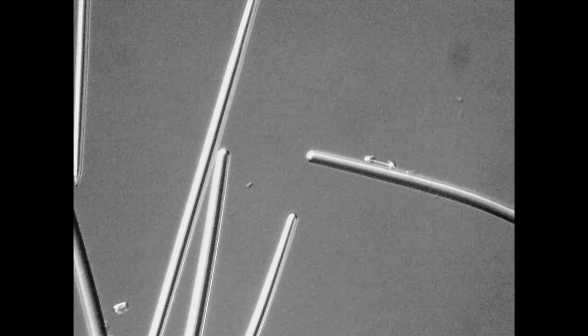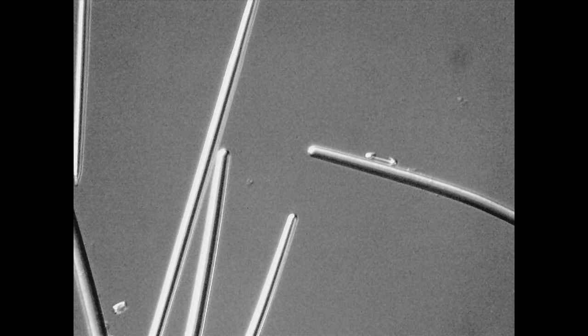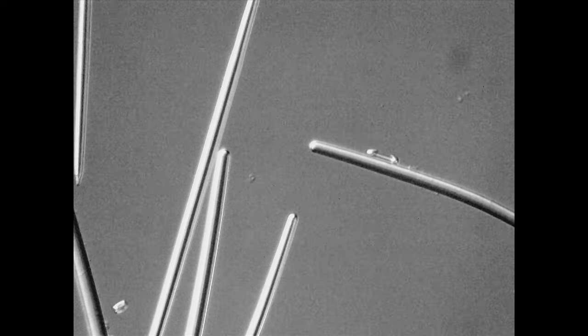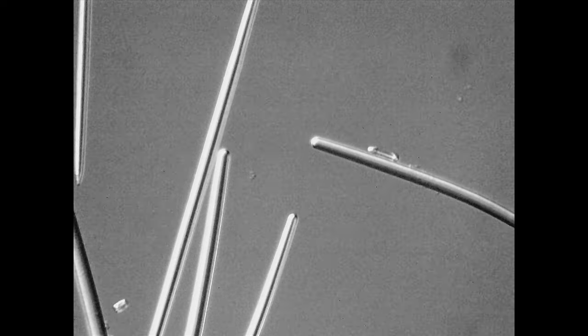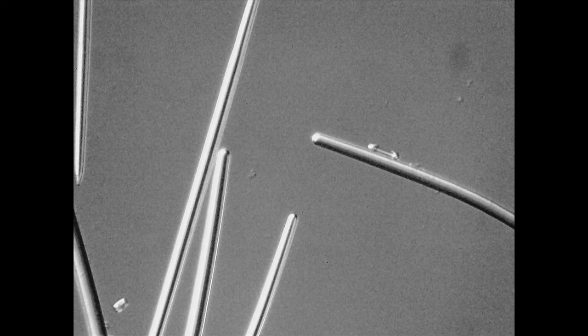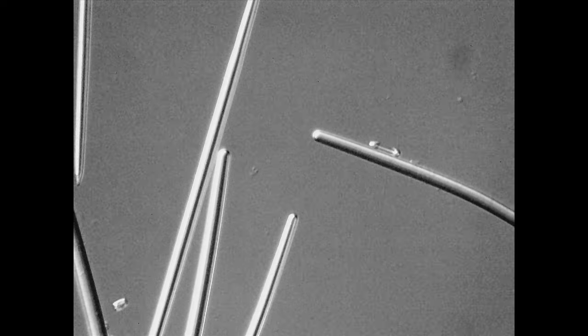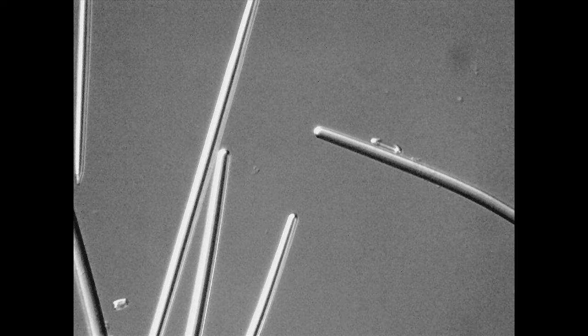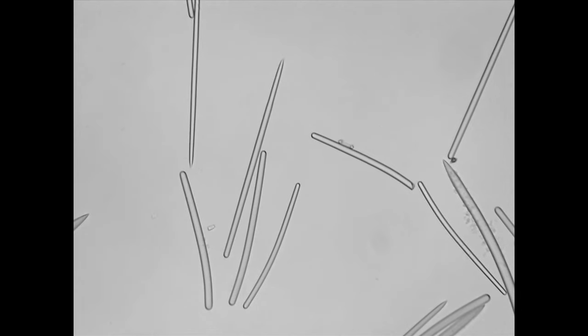Our second slide is Ea trachota birutulata and we can see the very small birotules here. This is at a higher power, this is a 200x magnification. If I go to the previous magnification, which is 100x, you can still see that birotule. The sponge also has a mix of strongyles and styles.